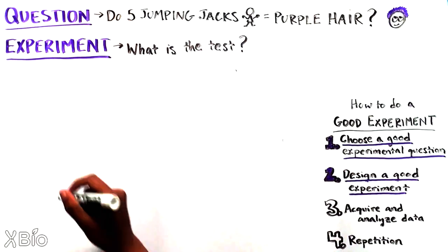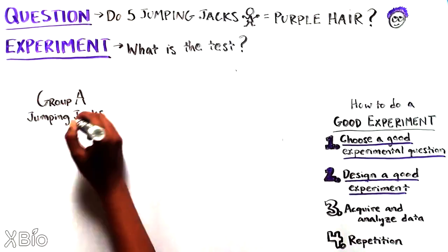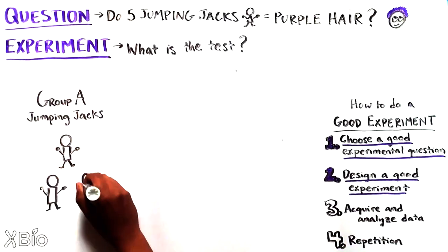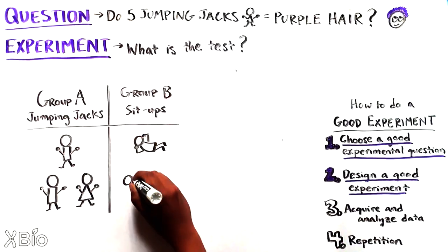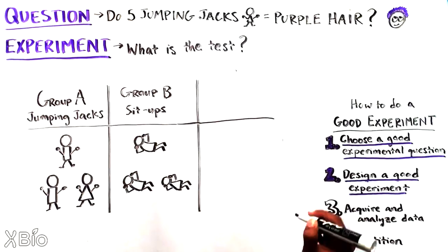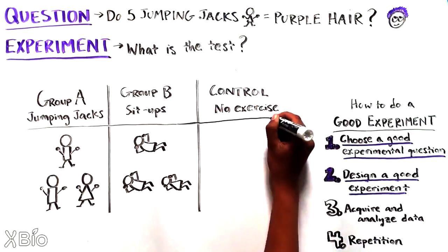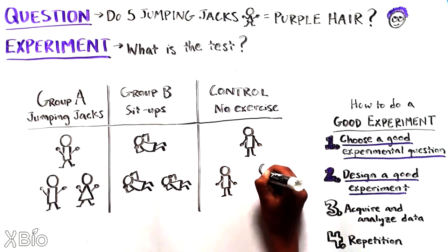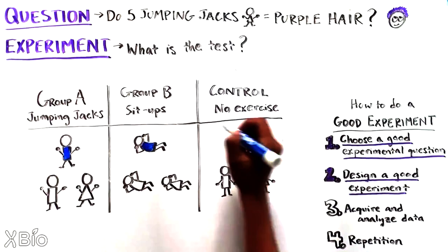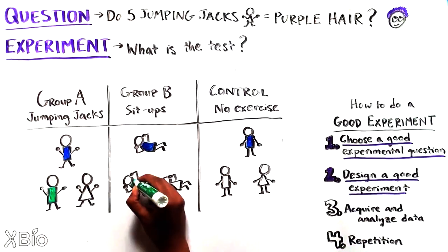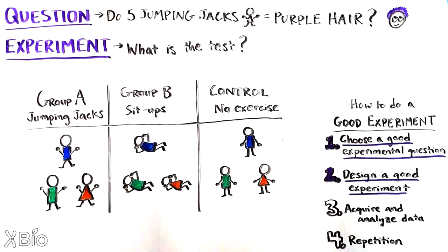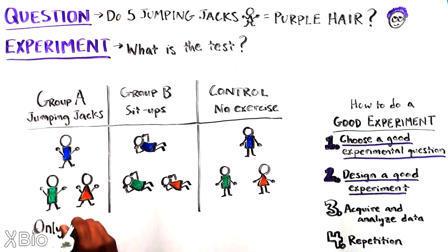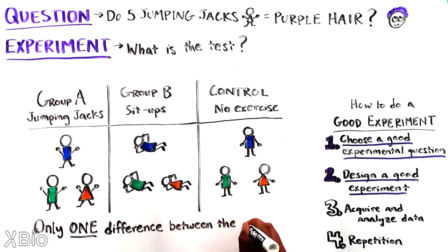We will need a group of people who will do jumping jacks, but it's also essential to have a group of people who do a different exercise, say five sit-ups. And finally, a group of people doing no exercise at all, the control group. Then we can be sure that any effect that we do see on hair color is not due to doing any type of exercise, jumping jacks or sit-ups, but is definitely due to the jumping jacks specifically. We want to make sure there's only one difference between the groups.